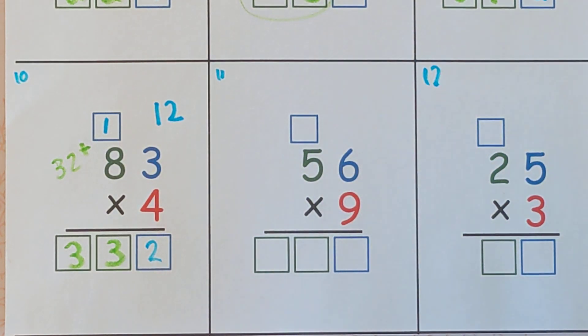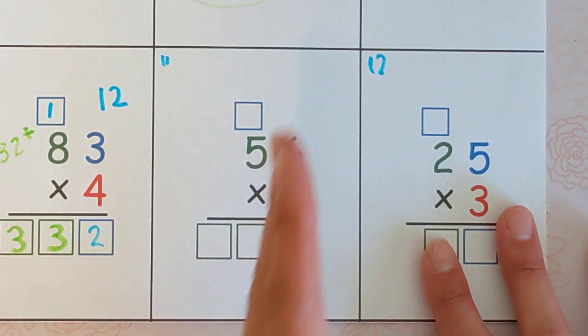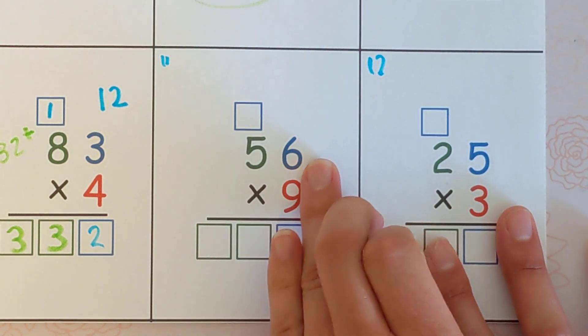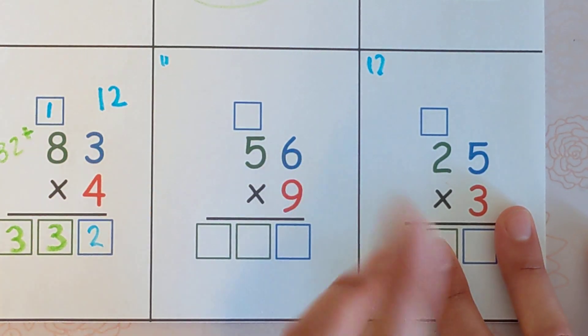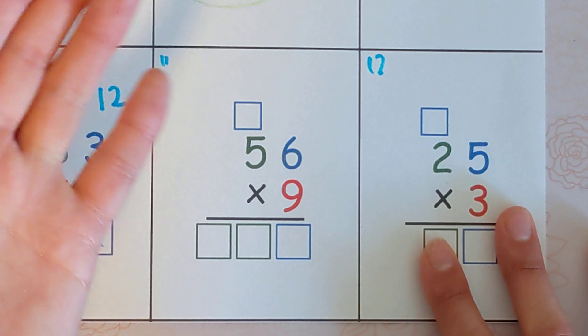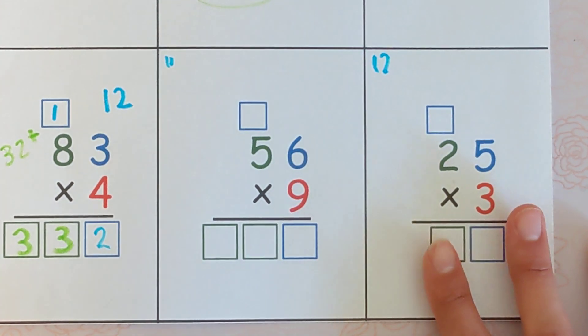We are doing the standard algorithm 56 times 9. So we are going to do right to left, so 9 times 6, then 9 times 5. When you do the 9 times 6, if you get two digits, you have to carry 1 because you can't fit them all down here. Then you'll do the 5 and you'll put it down here. Alright, so let's go ahead and get started.